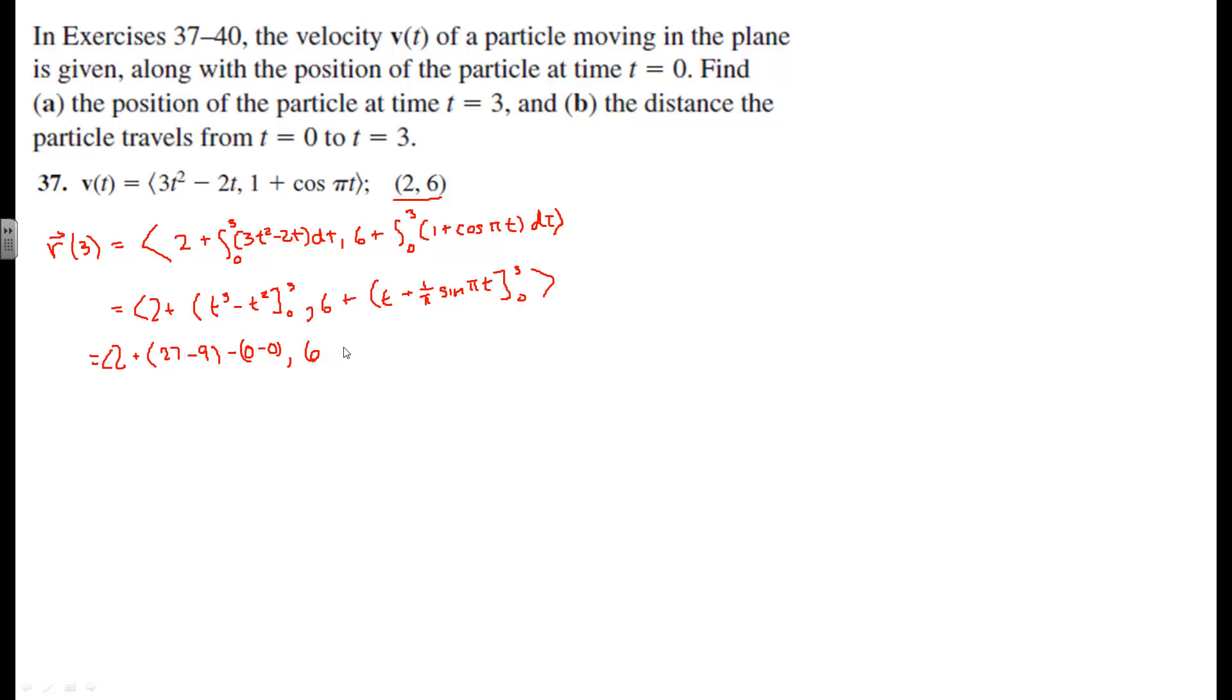And then over here we're going to say it's 6 plus, and at the high end we're going to get 3 plus 1 over pi times sine of 3 pi minus 1 over pi times sine of 3 pi. This is going to be 0, and then sine of 0 is 0.